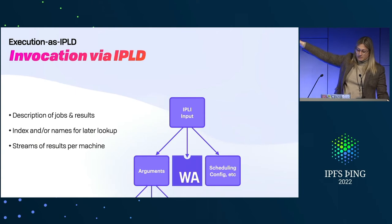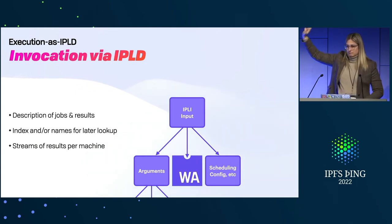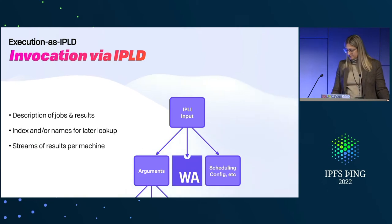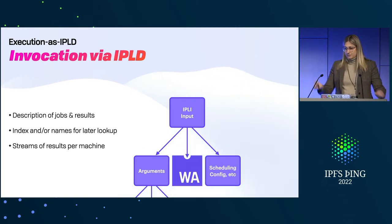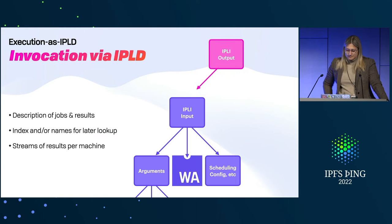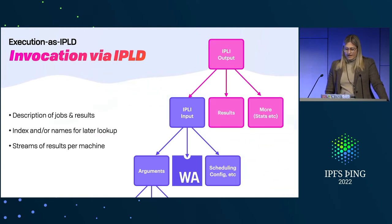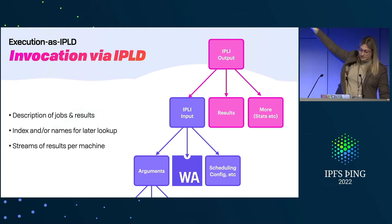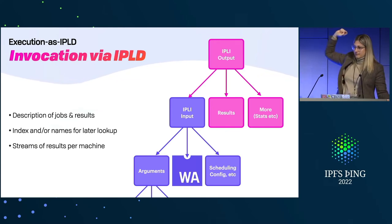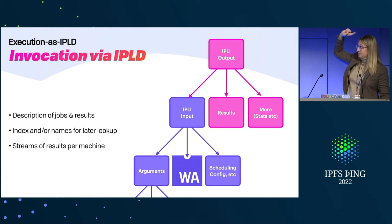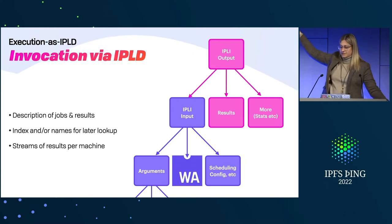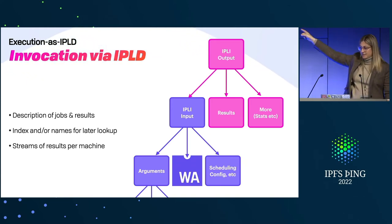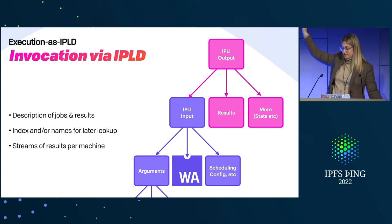We have the WASM blob, and then some configuration — scheduling, config, and so on. When this finishes or goes into the queue, we have an output: results at minimum, and possibly more data — stats, how long it took to execute, whether anything else needs to get run after this, whether this was suspended. We want to connect them together in a tree. If I'm doing optimistic verification, I'll have two differences at the top of the tree, and then I know which ones I actually need to go and check.